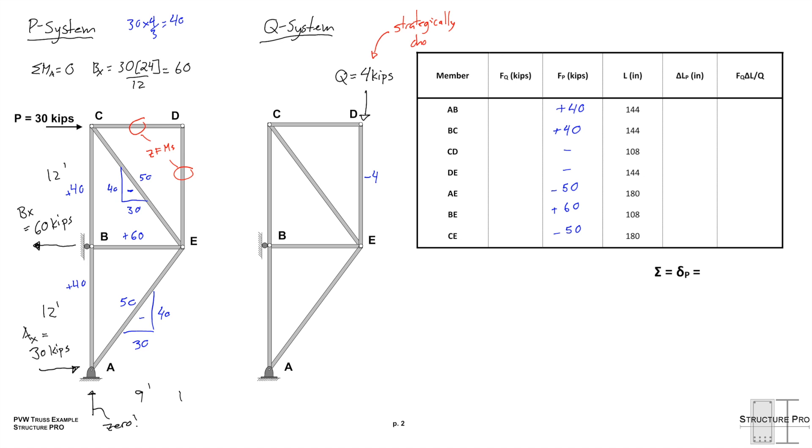So like I said, this Q equals 4 was strategically chosen and we'll see why in a second because as we sum all the moments about A, we find that this time the reaction Bx is equal to 3 kips. It would have been a fraction had we used 1, but this way it's just 3. Try it out, you'll find it's 3.